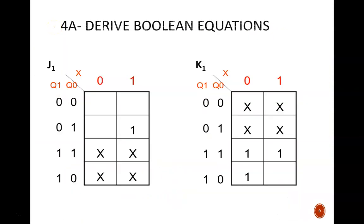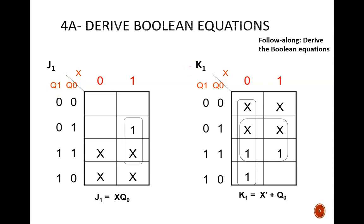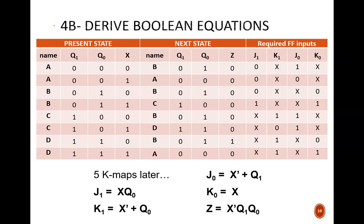Step 4 is to find the simplest Boolean equations for all the flip-flop instructions, as well as the output. Remember that the inputs to the K-maps come from the present state columns of our table. Here, we see the equation for J1, and now we see the equation for K1. Take a couple minutes to derive the remaining equations, J0, K0, and Z.